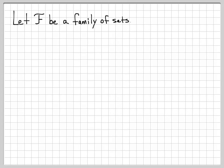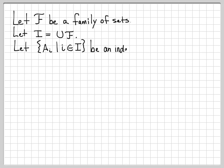In this example, we're going to look at families of sets and indexed families of sets. We're going to start off with F being a family of sets, and we are going to create another set from that. We're going to let I be the union of F — so I is the union of all the elements of the family of sets F. Then we're going to construct an indexed family of sets, where the sets Ai are an indexed family of sets with little i being an element of capital I. We're going to look at some different functions of these sets with a very specific example to understand what these different quantities look like.